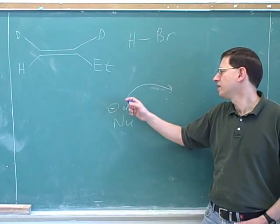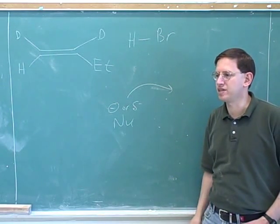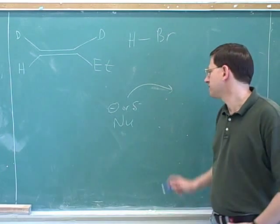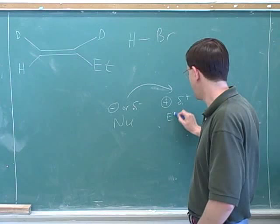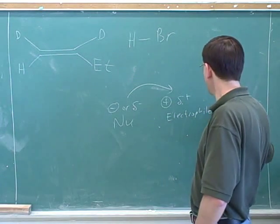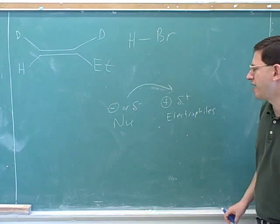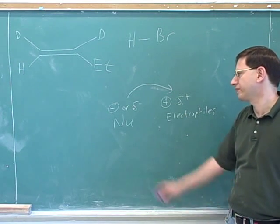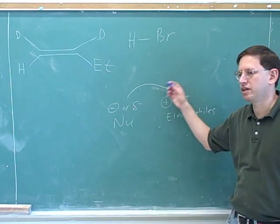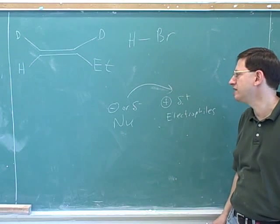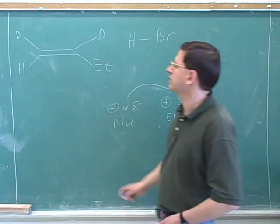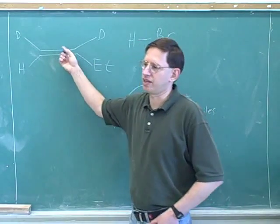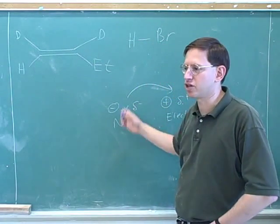We tend to put nucleophiles, things with negative or partial negatives at tails. And we tend to put positives or delta positives at heads. Pretty much all the reactions we've seen so far that weren't radical mechanisms, we put something negative or delta negative at the tail, something positive or delta positive at the head. But now we are breaking that pattern. We just need to also memorize carbon-carbon double bonds are also nucleophilic, even though we can't explain that based on the charges.